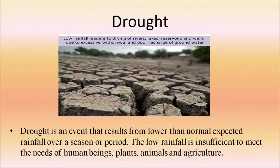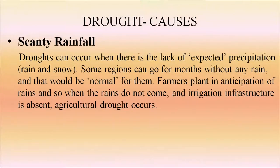Drought is an event that results from lower than normal expected rainfall over a season or period. The low rainfall is insufficient to meet the needs of human beings, plants, animals and agriculture. One cause is scanty rainfall — droughts occur when there is a lack of expected precipitation. Farmers plant in anticipation of rains, and when the rains do not come and irrigation infrastructure is absent, agricultural drought occurs.